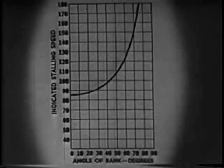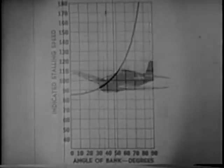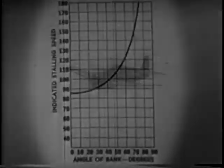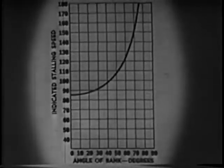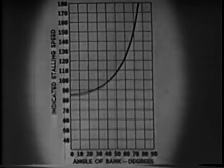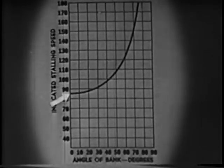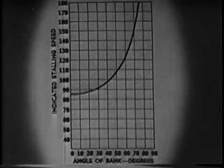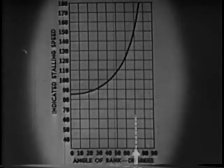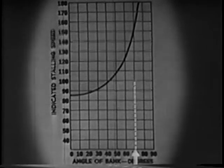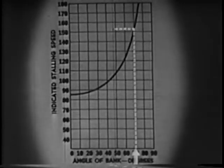Now let's look at a service type aircraft, such as the F6F. With normal load, the F6F in level flight clean stalls at 86 knots. And in a 70-degree bank, you need about 155 knots to be safe.